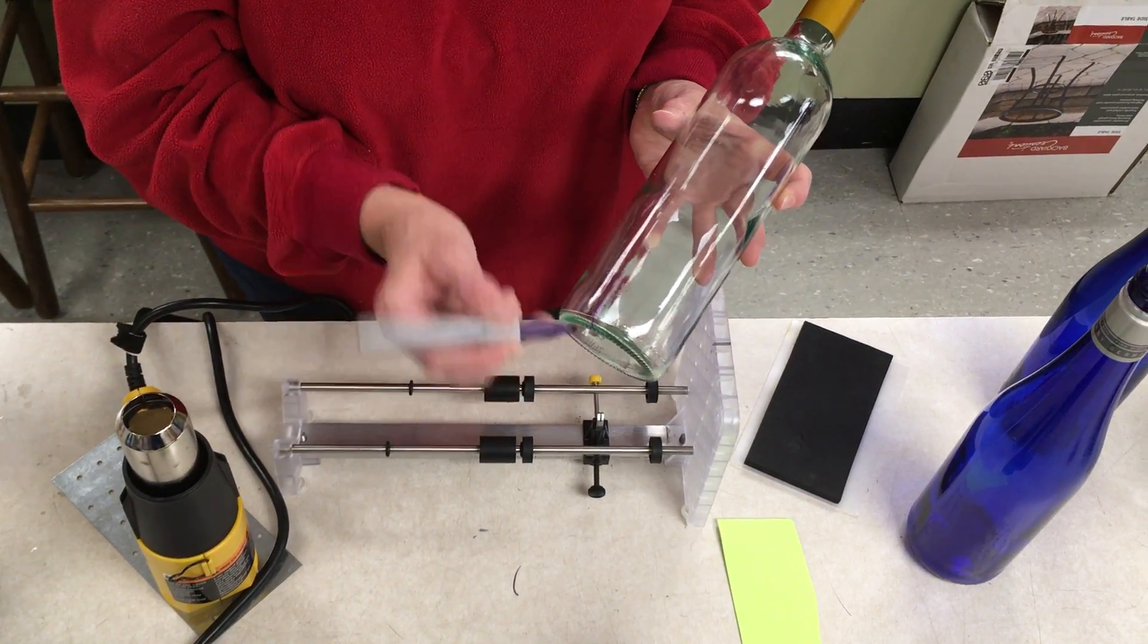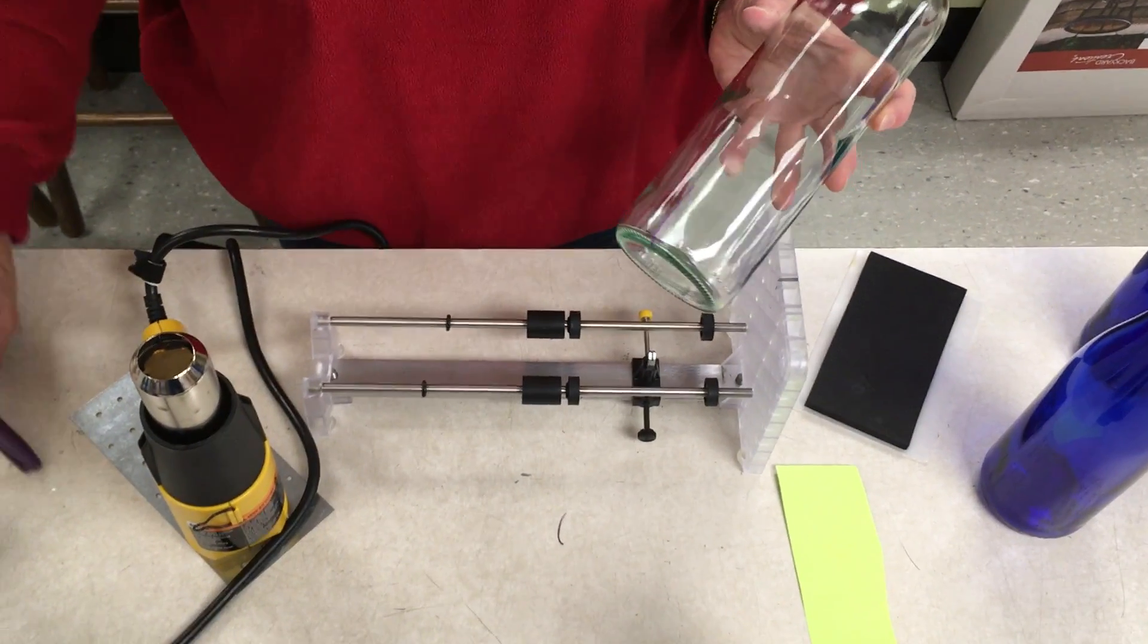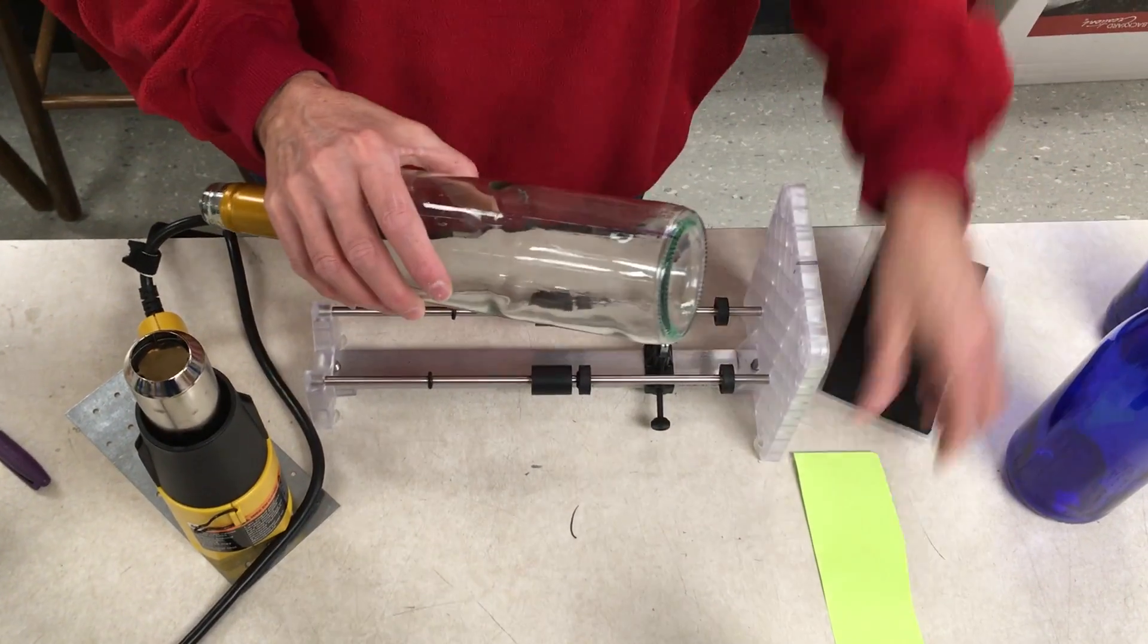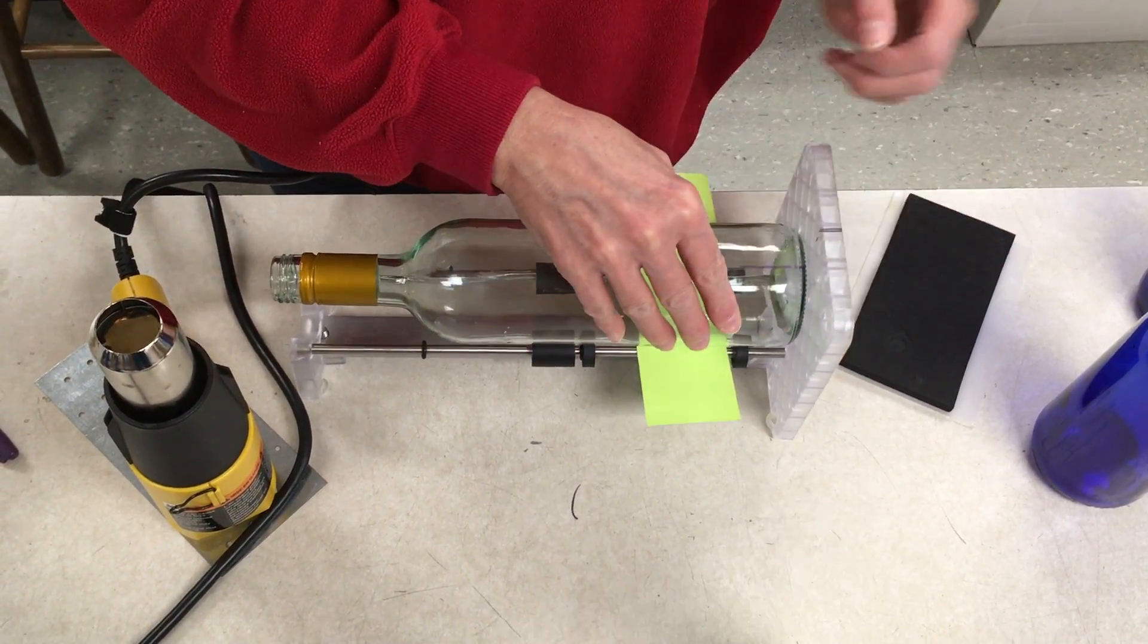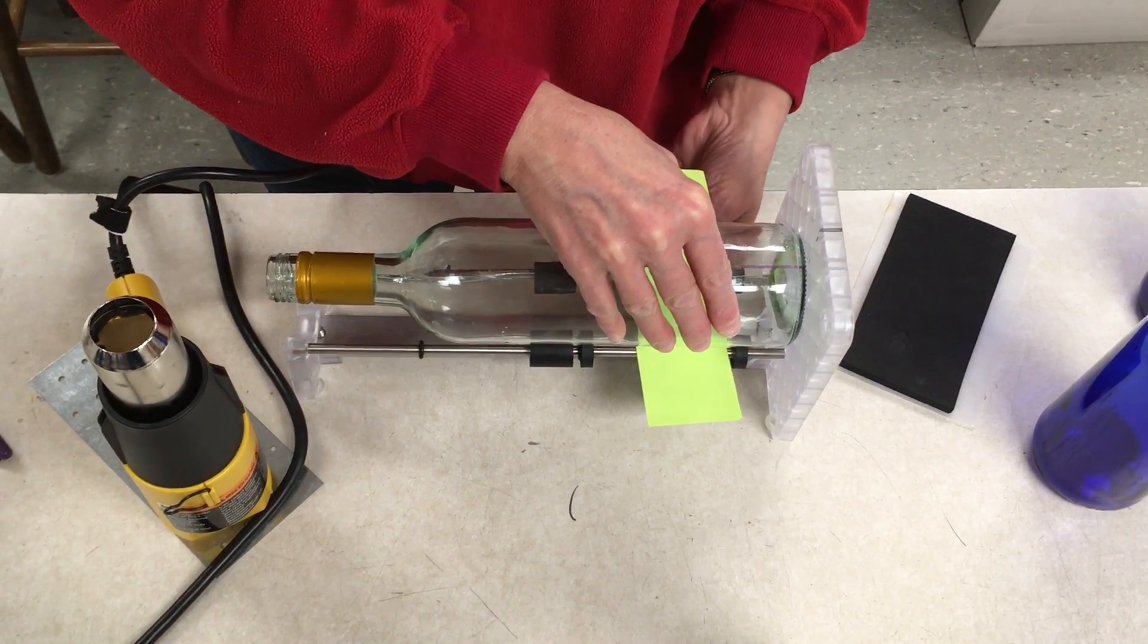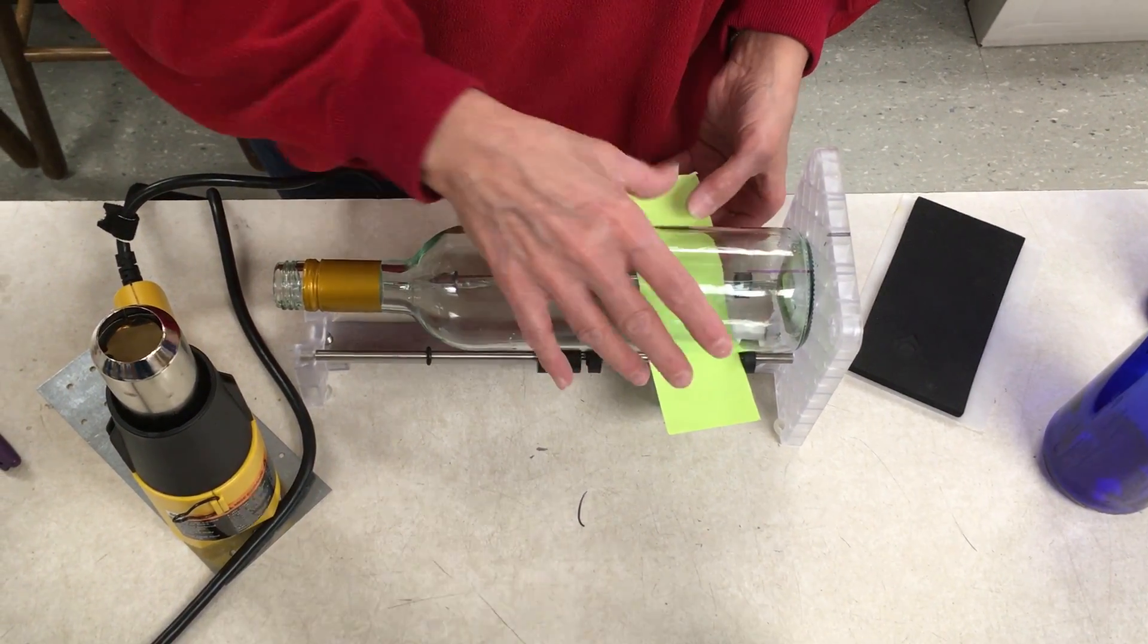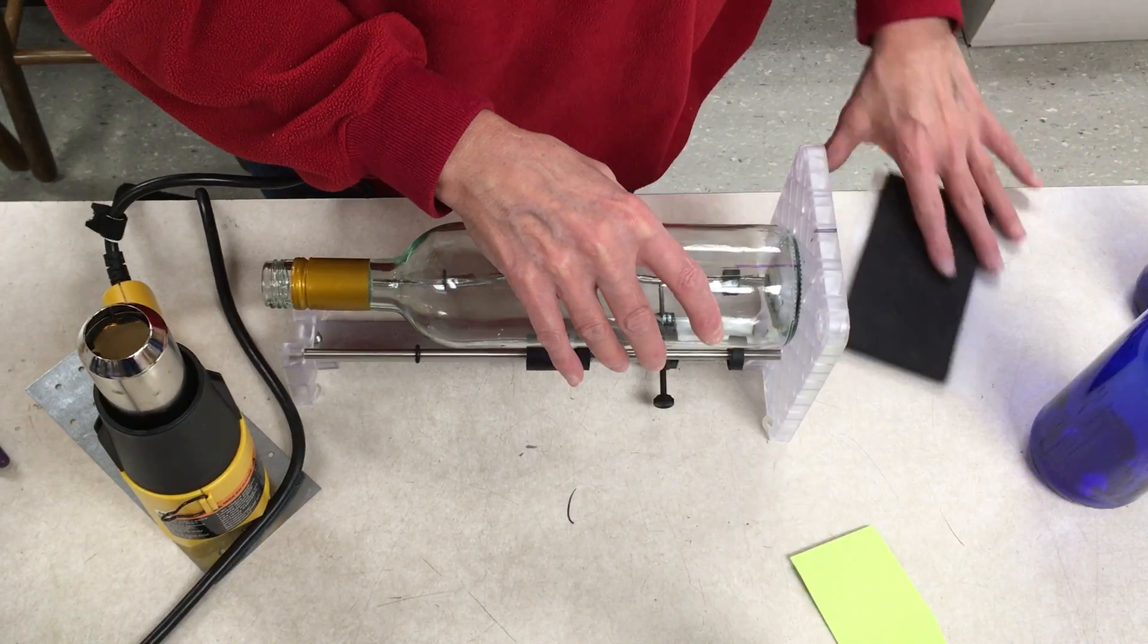We're going to make our start-stop line so we know when we've made a full rotation. I like to put a piece of paper in between my cutter wheel and my bottle so that I don't accidentally start the score before I'm ready.